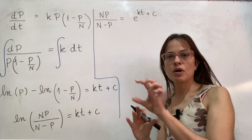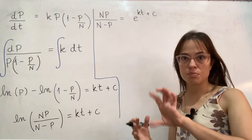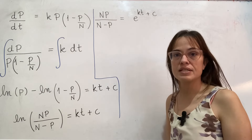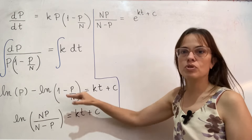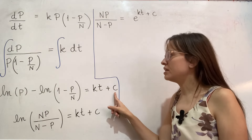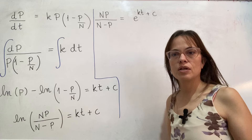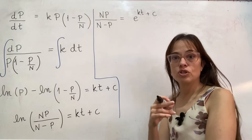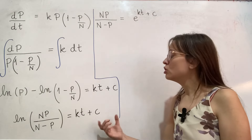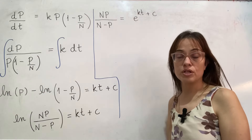It is not e to the power of kt and then plus c — the plus c actually needs to stay in the exponent. That is the common mistake: sometimes people let the plus c fall down outside. The proper moment to include plus c in the solution is when you do the integration, because it's integration that creates this constant. After that, the rest of the process is no different from solving a regular equation.